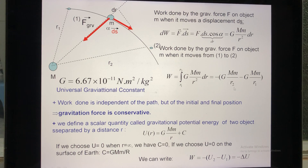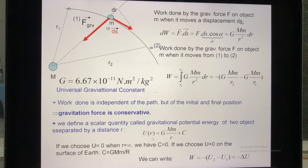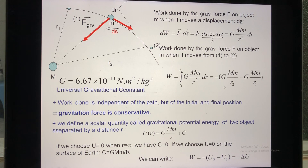So we have the formula for potential energy: it is G times capital M times m divided by the distance R. Here is the definition of potential energy. We have a final potential energy and an initial potential energy. If you take the final value minus the initial value, you get delta U — the change in potential energy. With the minus sign, you can rewrite it, giving the relationship between work and potential energy: W = −ΔU.